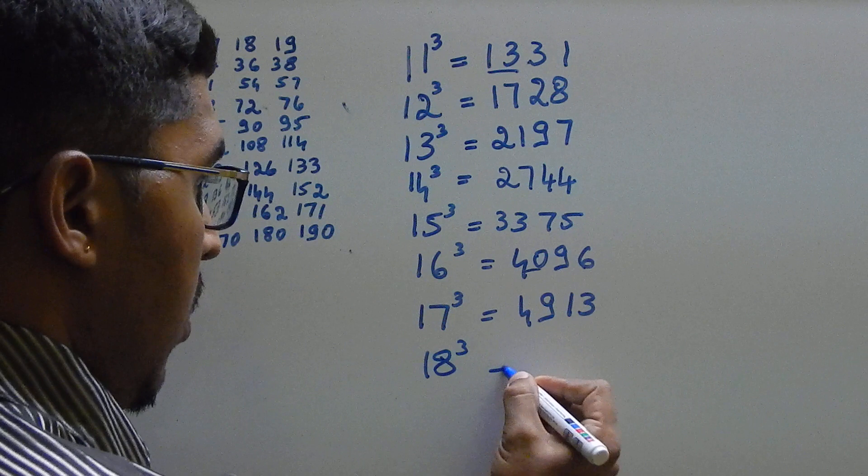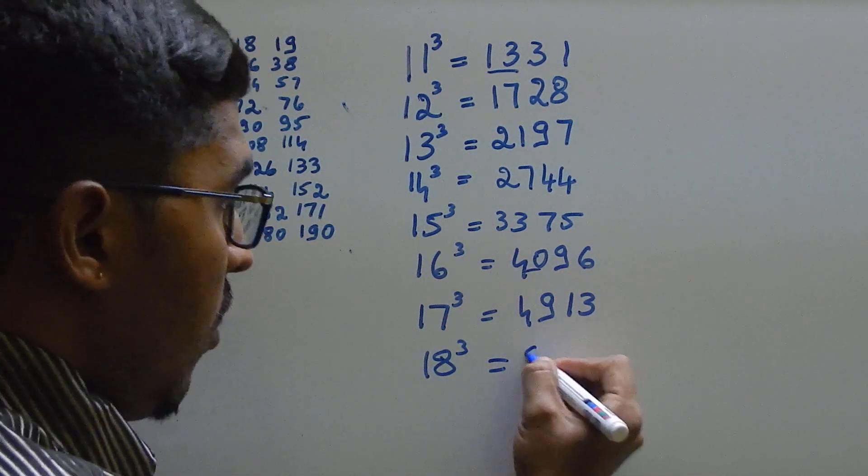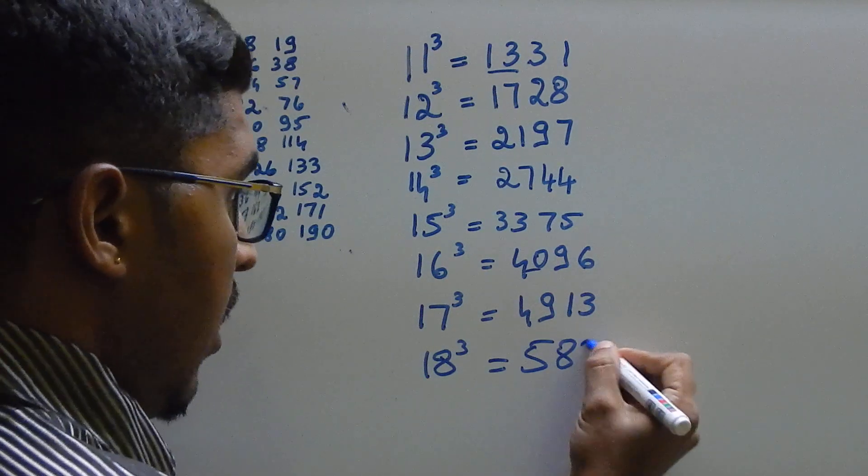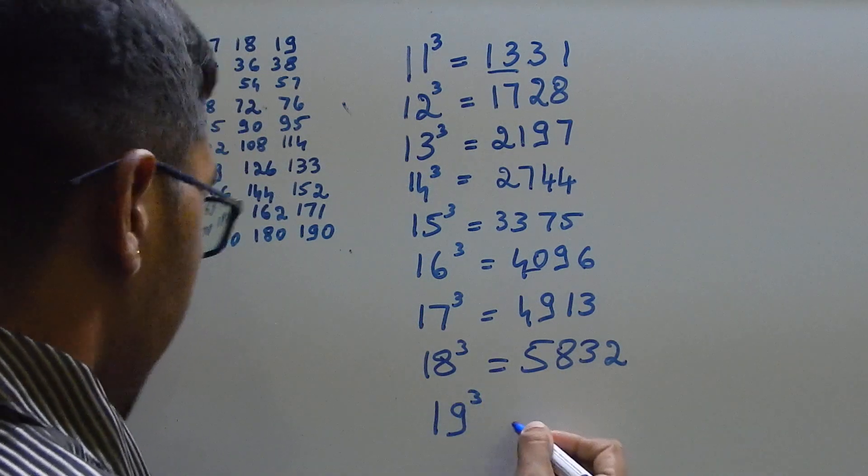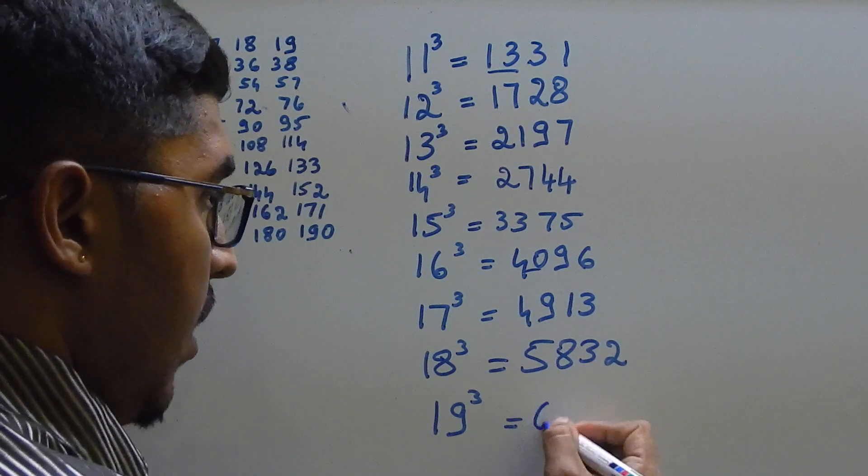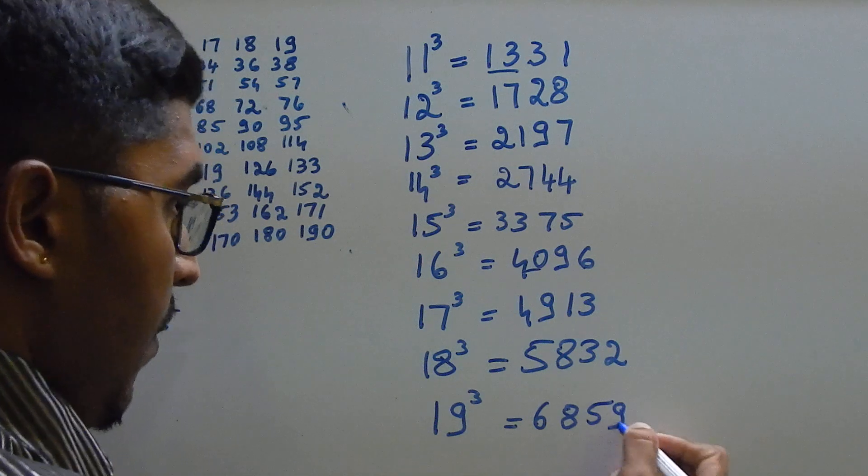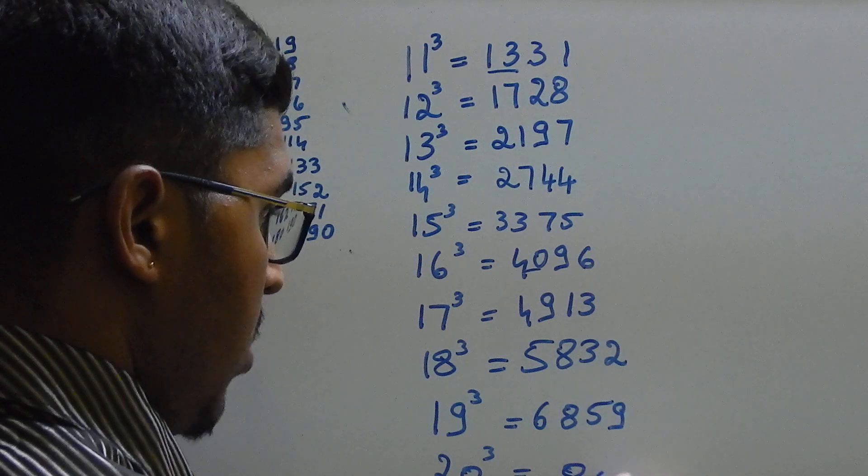Next, 18 cube. How will you write? 18 cube. Add 9 to 49. You get 58. 58, 32. 19 cube. How will you write? Add 10 to 58. 68, 59. 20 cube. You already know. It is 8000.